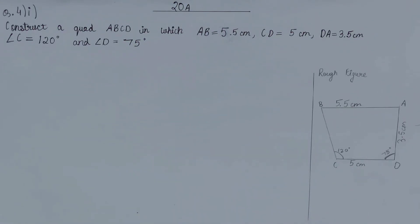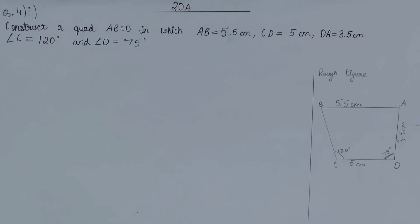Hello friends, welcome back to my YouTube channel 'Unlock Your Learning.' In this video, we are going to solve ICSE Mathematics Class 8, Chapter 20: Construction of Quadrilaterals, Exercise 20A, Question Number 4. This is the first part of this question.